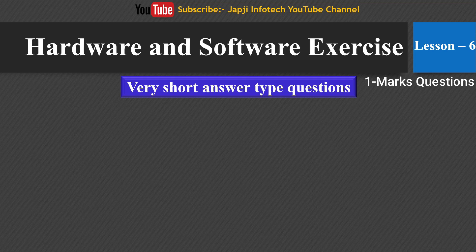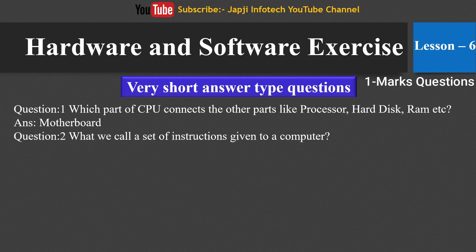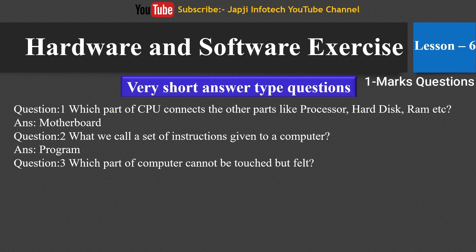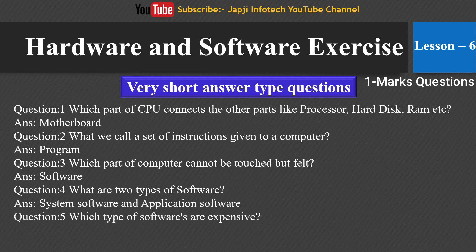Now we will learn about very short answer type questions for Lesson 6. The first question is: which part of the CPU connects the other parts like processor, hard disk, RAM etc.? The second question is: what do we call a set of instructions given to a computer? The right answer is program. The third question: which part of the computer cannot be touched but can be felt? The right answer is software. The fourth question: what are the two types of software? The right answer is system software and application software. The fifth question: which type of software is expensive? The right answer is system software.